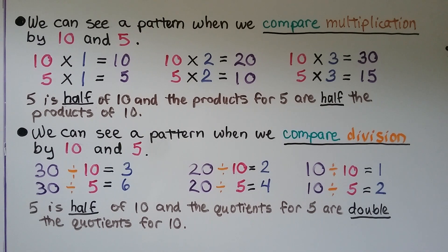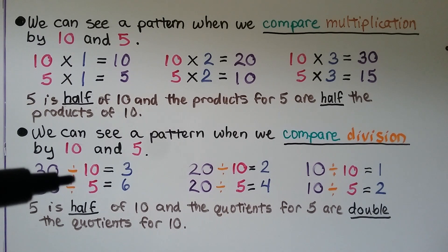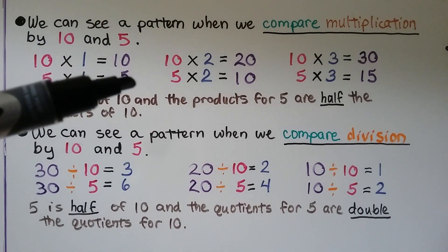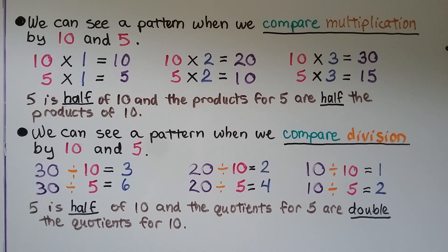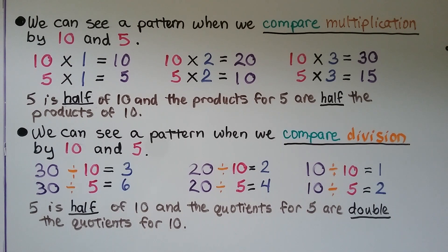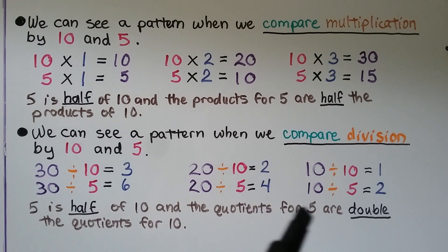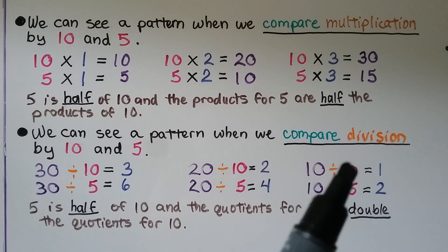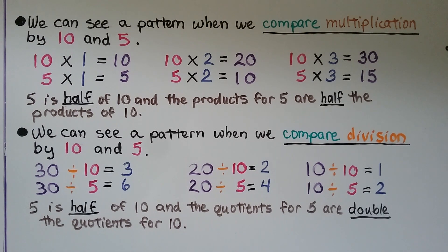We can also see a pattern when we compare division by 10 and 5. For example: 30 divided by 10 equals 3, and 30 divided by 5 equals 6. Since 5 is half of 10, the quotients for 5 are double the quotients for 10. Similarly, 20 divided by 10 is 2, and 20 divided by 5 is 4. And 10 divided by 10 is 1, while 10 divided by 5 is 2. The products for 5 are half of 10, but the quotients for 5 are double the quotients for 10.